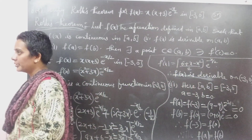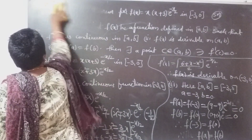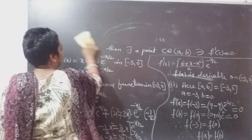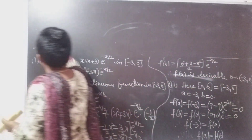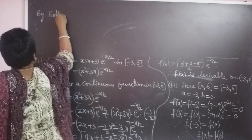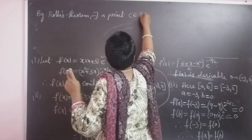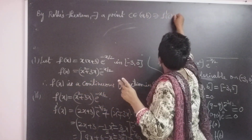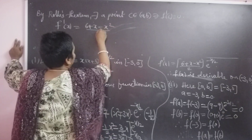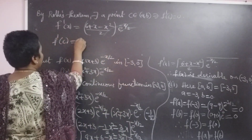By Rolle's theorem, the third condition is also satisfied. By Rolle's theorem we can find the C value. There exists a point C belonging to open interval (A, B) such that F'(C) equal to 0. Here, F'(X) equal to (6 + X - X²) divided by 2, into e^(-X/2). Setting F'(C) equal to 0 gives us the relation to solve.